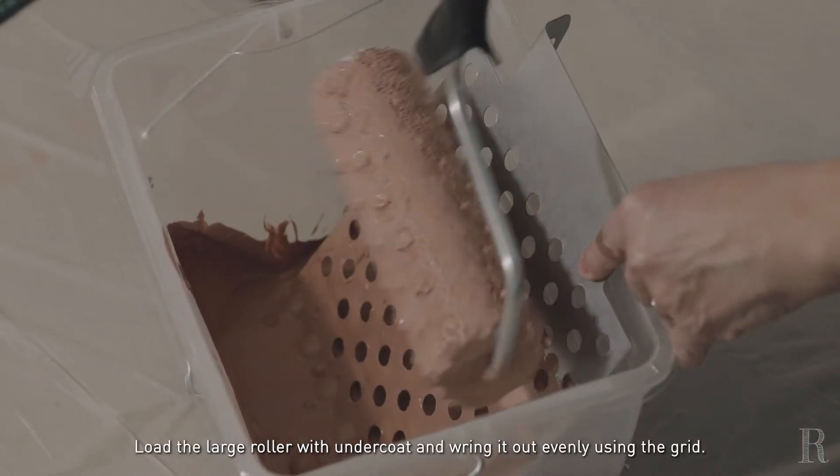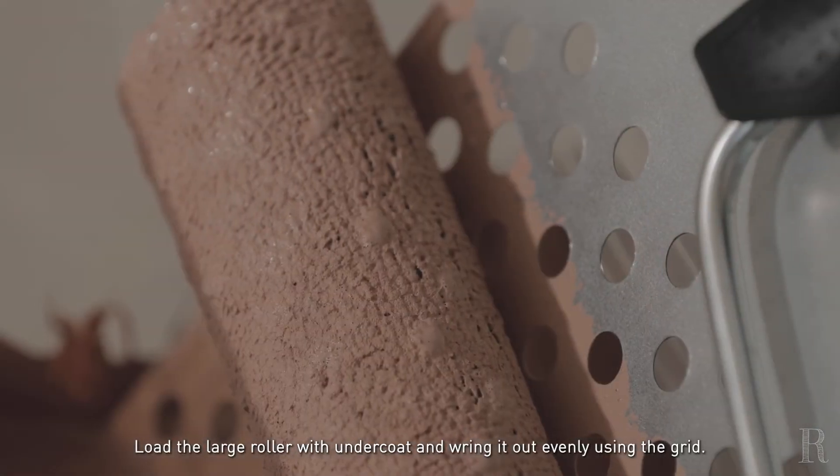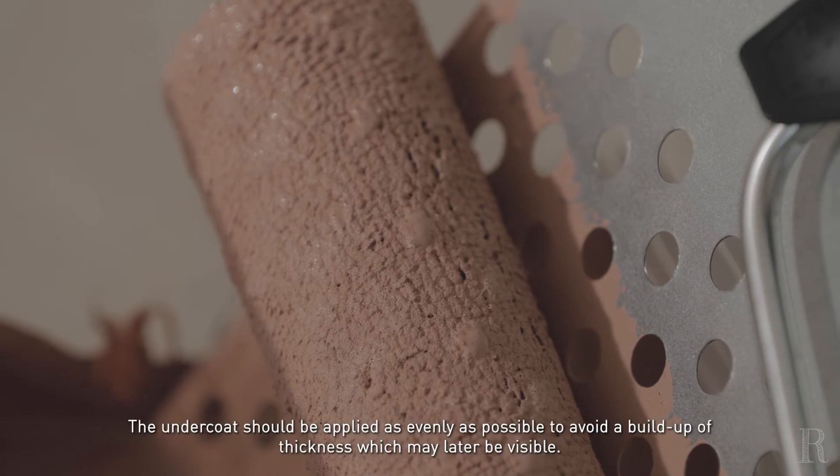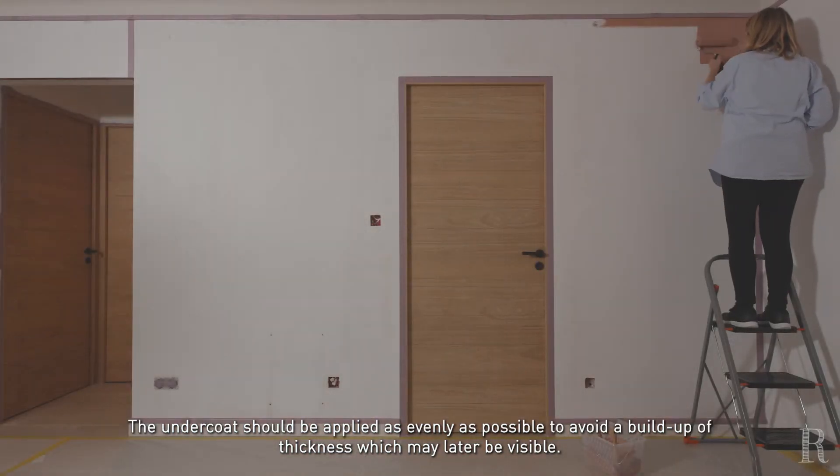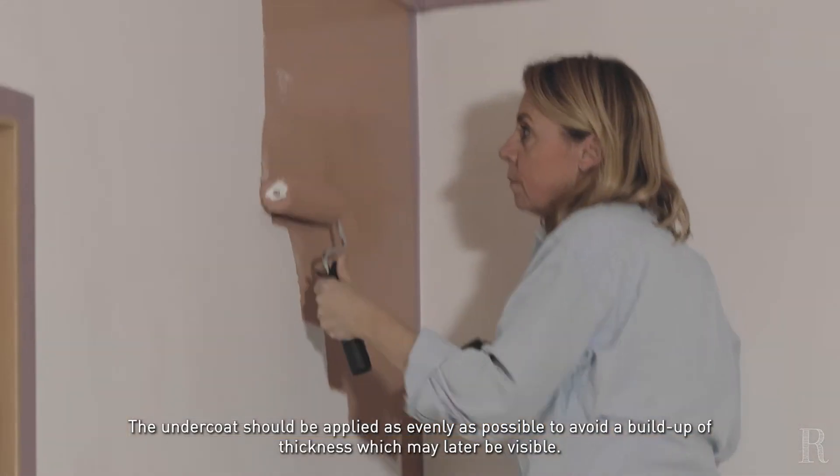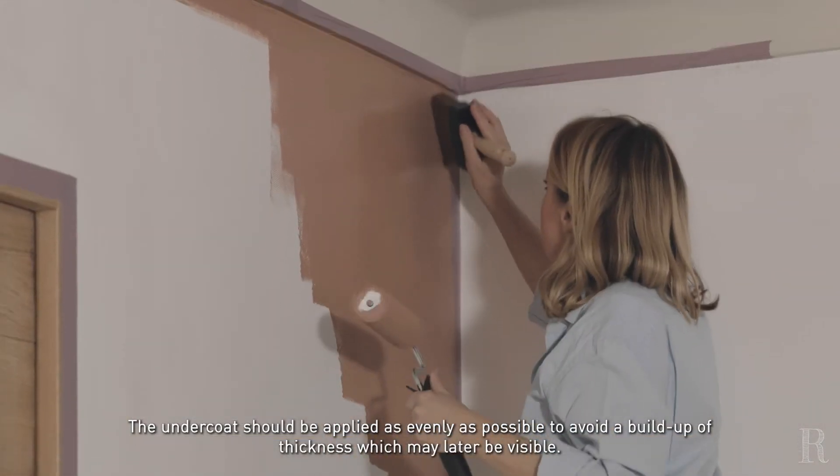Chargez le grand rouleau de sous-couche et essorez-le uniformément sur la grille. La dépose de la sous-couche doit être la plus régulière possible pour éviter les surépaisseurs qui pourraient ensuite apparaître sur le résultat final.